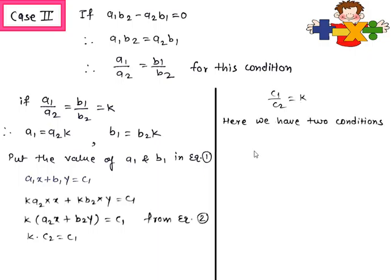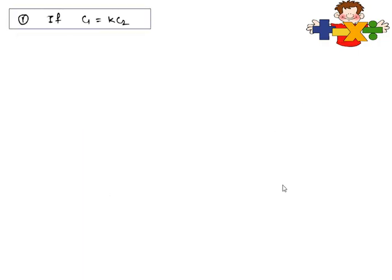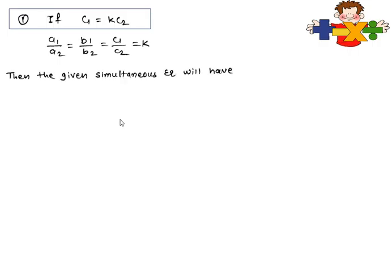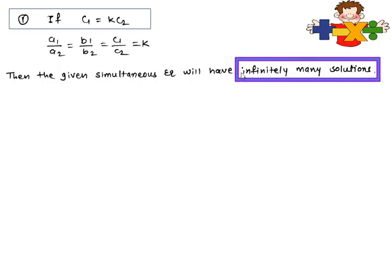In this condition there are two further sub-cases: either c1/c2 is equal to K or c1/c2 is not equal to K. If c1/c2 equals K — same as the first case — then a1/a2 = b1/b2 = c1/c2 = K, meaning all three ratios become equal to each other.